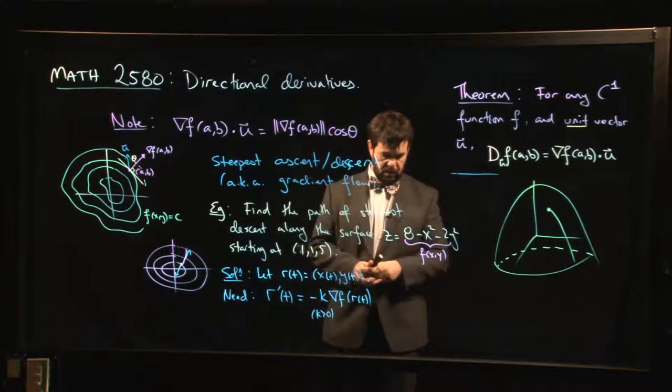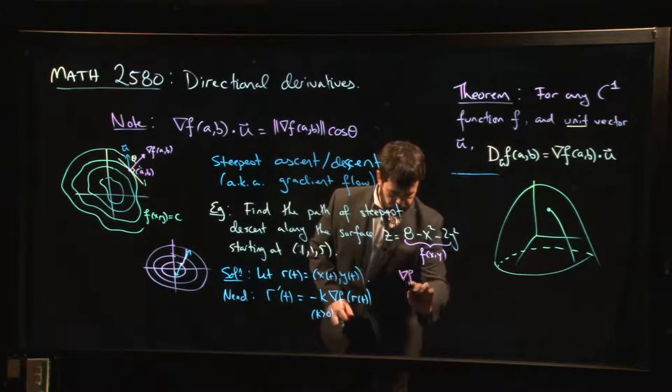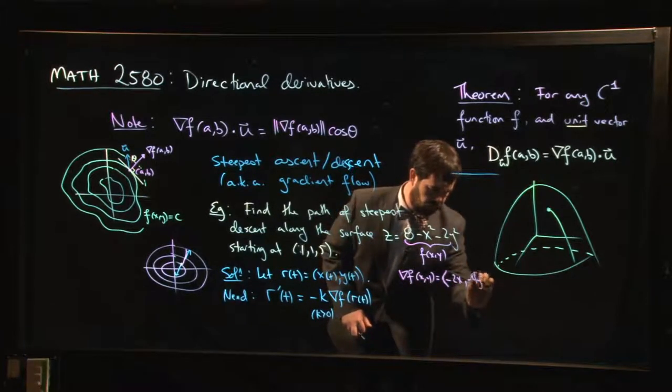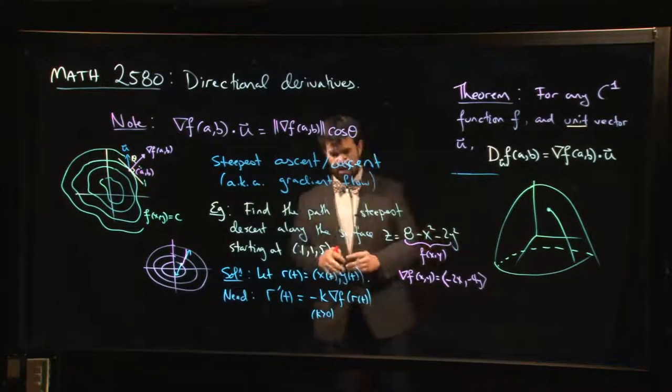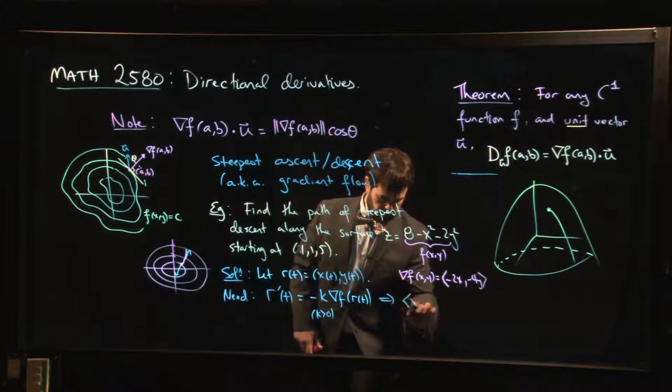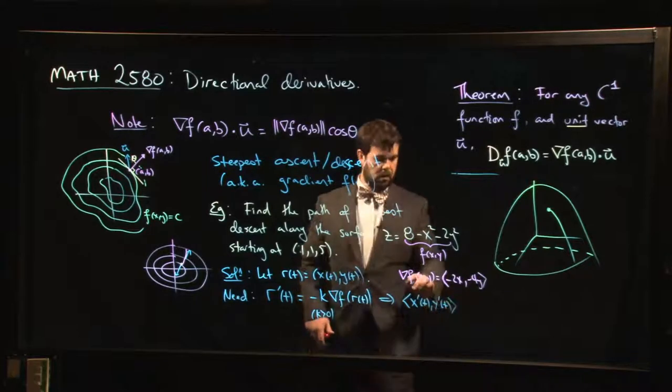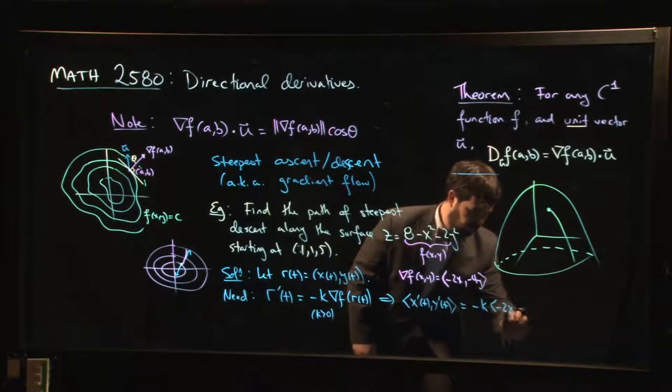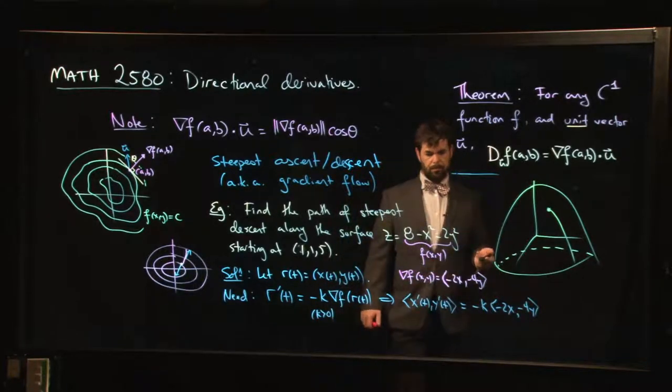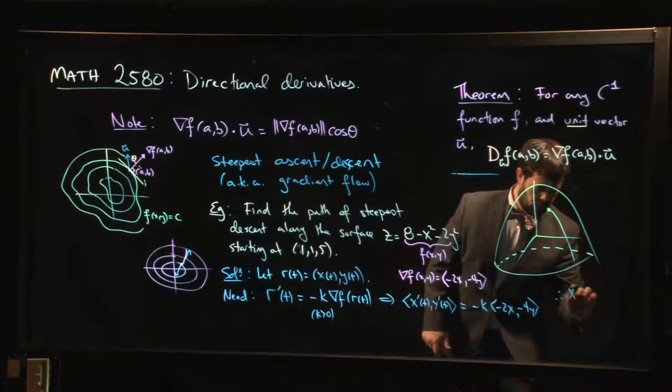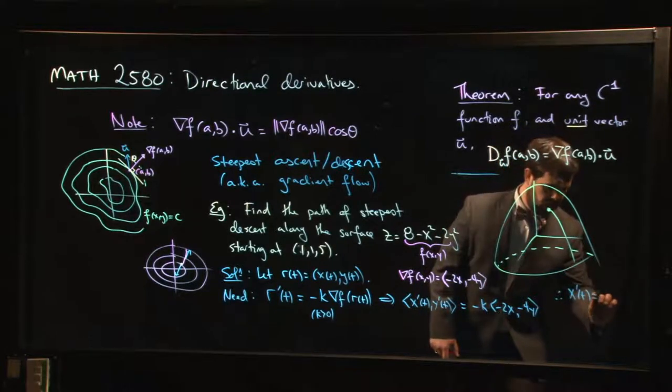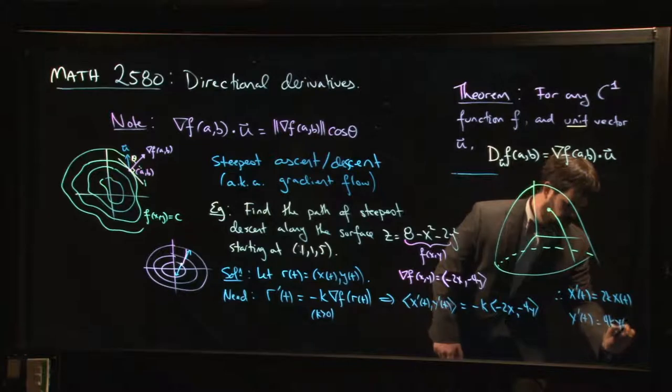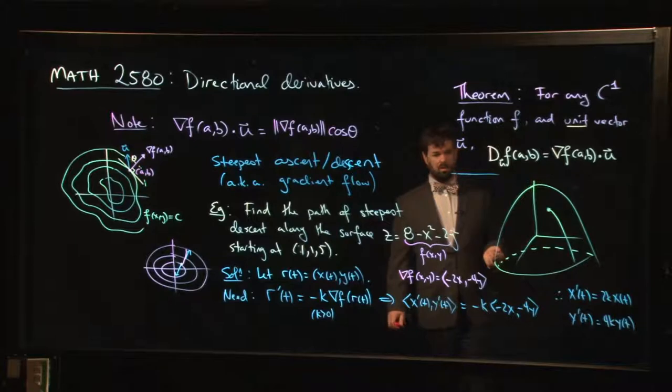So now you put everything in and you think, what does this equation look like? Well, first of all, I know what the gradient looks like. I know that the gradient looks like minus 2x, minus 4y. And so what I have here is I have x prime of t, y prime of t equals minus K times minus 2x, minus 4y. And so that means that you need x prime of t to be 2Kx(t). You need y prime of t to be 4Ky(t). And those are differential equations that you can solve.